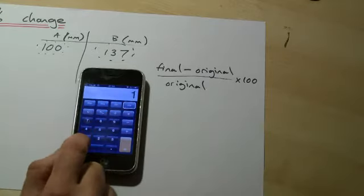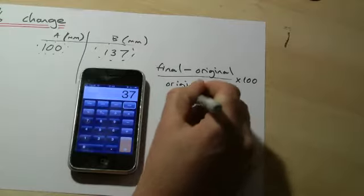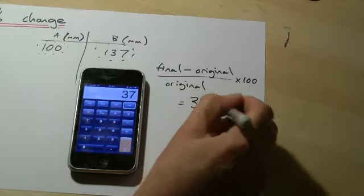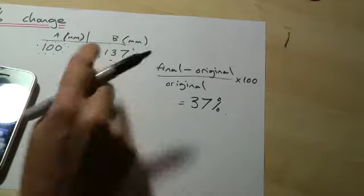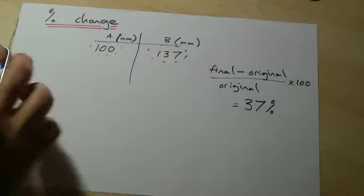Multiply that by 100, and it's increased by 37%. Now you could have worked that out probably by looking at the numbers, I've just used these simple ones first of all so we can see that the formula actually works.